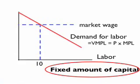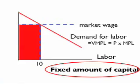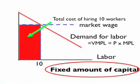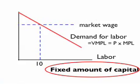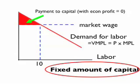Now we want to look at how we allocate the costs across the two factors. The red rectangle is the total cost of hiring the 10 workers — it's the wage times the number of workers hired. If we assume zero profits, that is total cost equals total revenue, then the triangle is the remaining amount of revenue paid to capital.